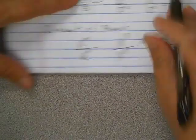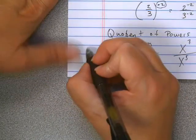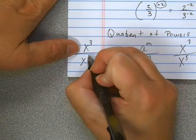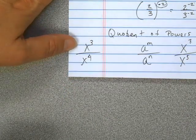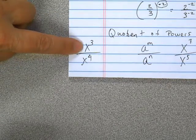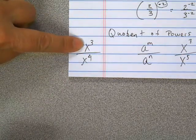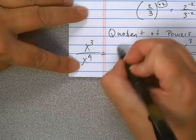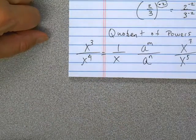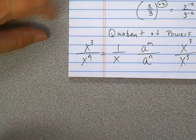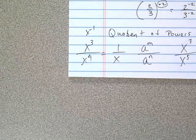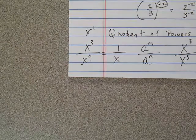If it was reversed, so let's say I had x to the third on top and x to the fourth on bottom, in this case I would have more x's on bottom than I do on top. So these three would cancel with three on the bottom and leave me one on the bottom, which is the same thing as x to the negative one, but a problem is simplified whenever it does not have any more negative exponents.